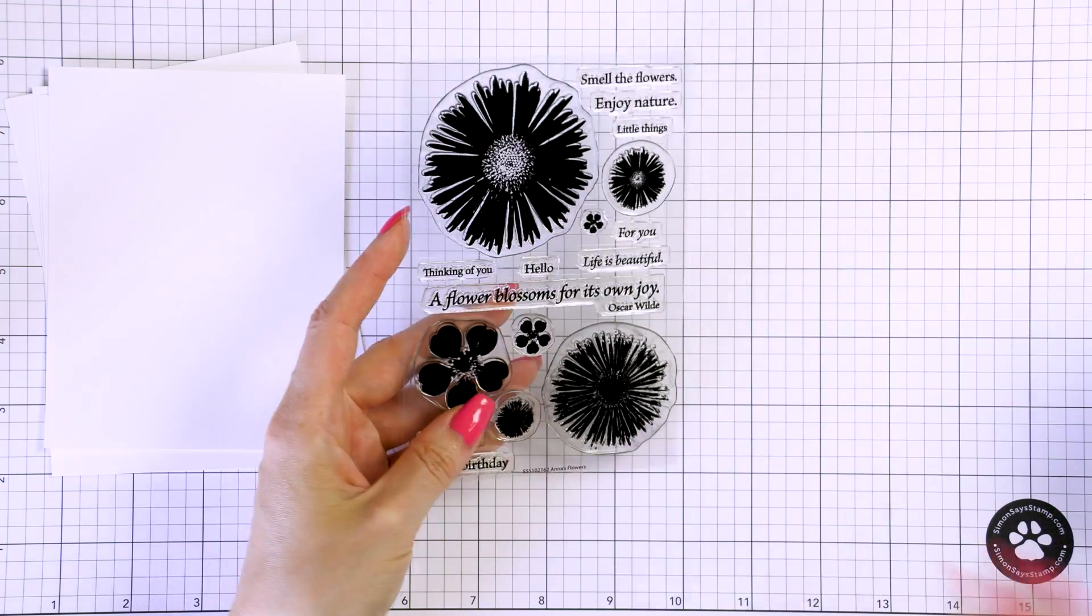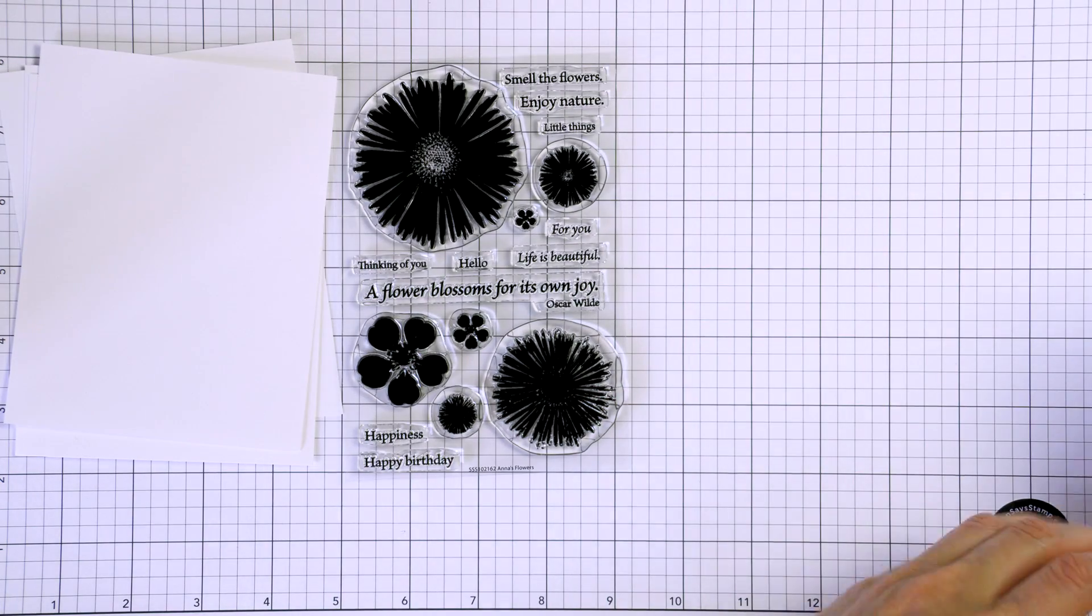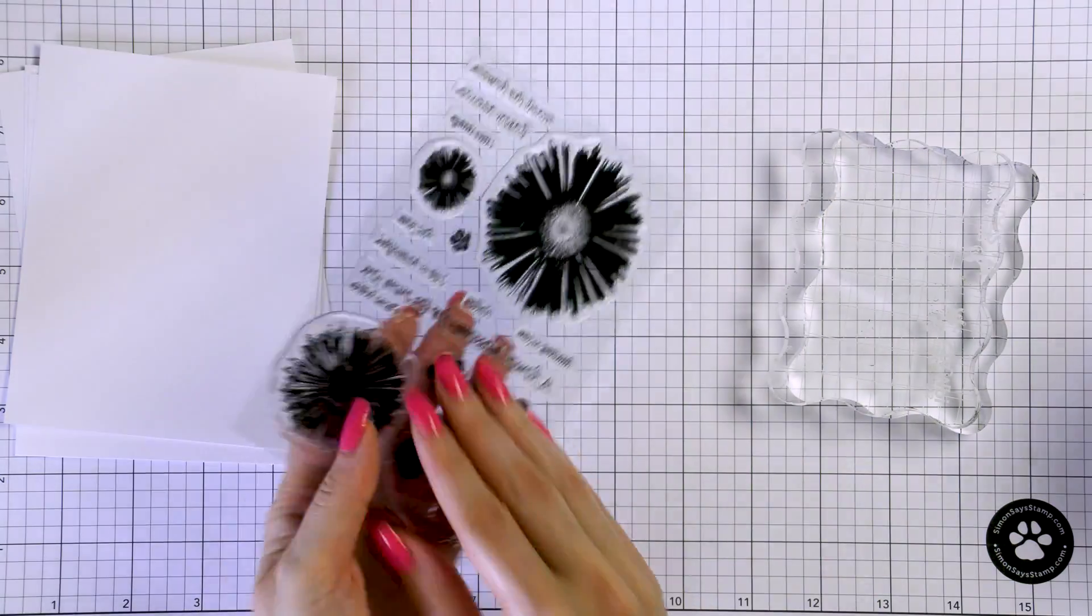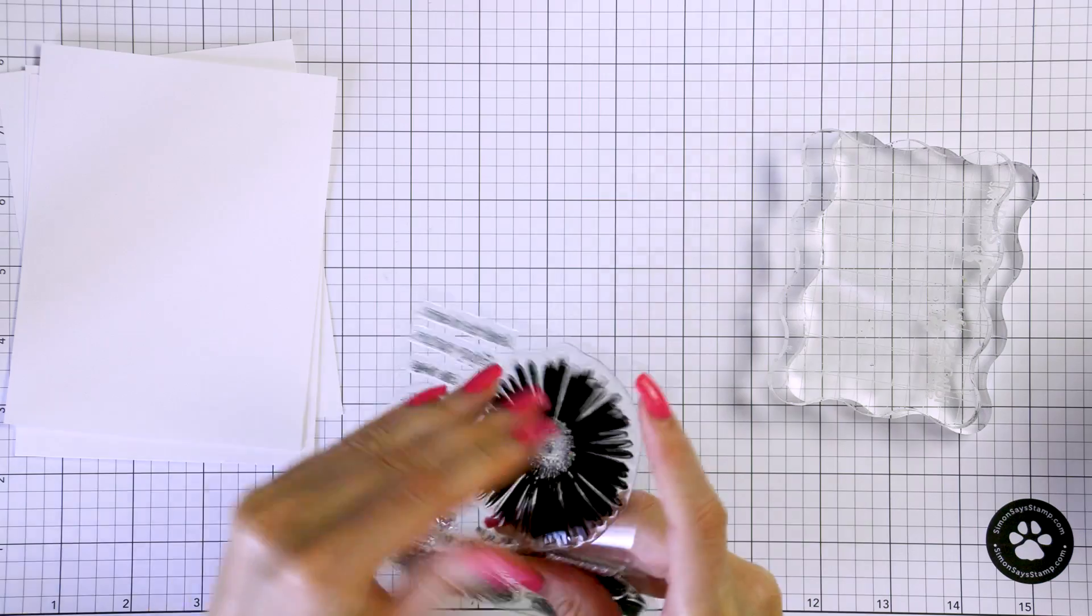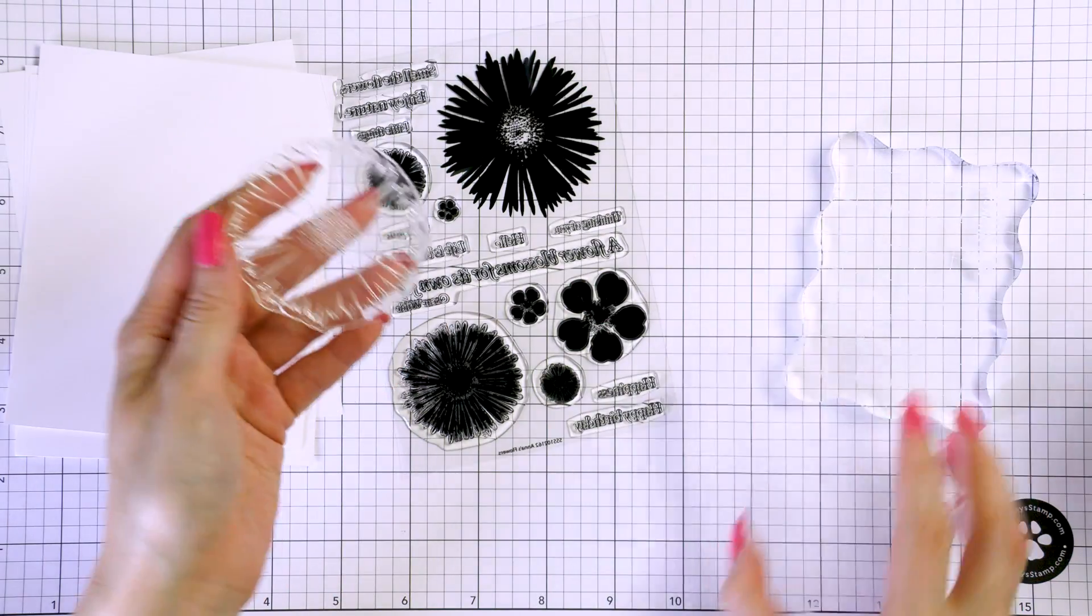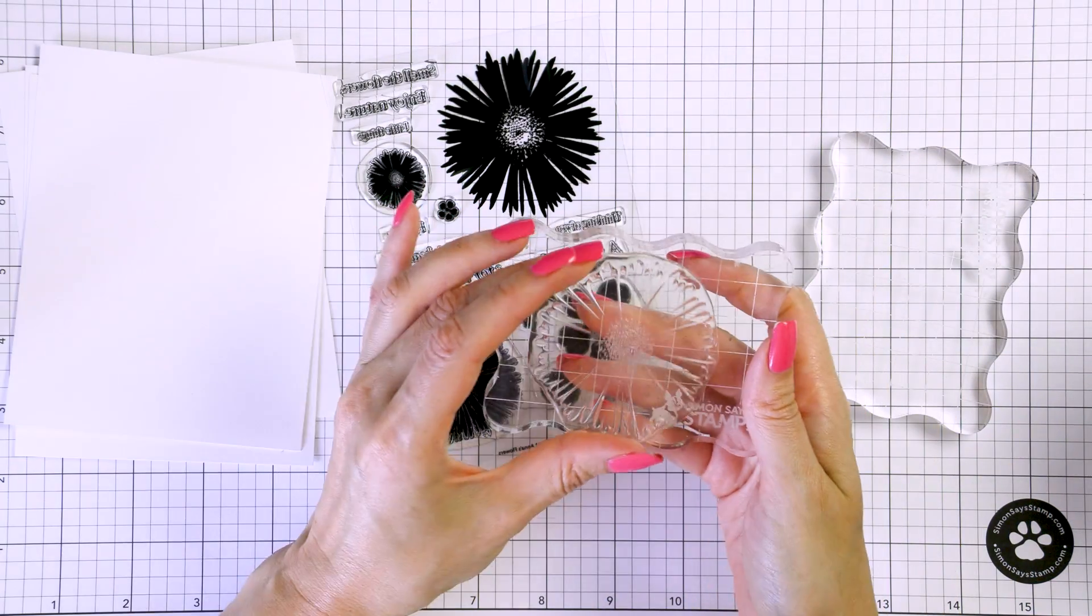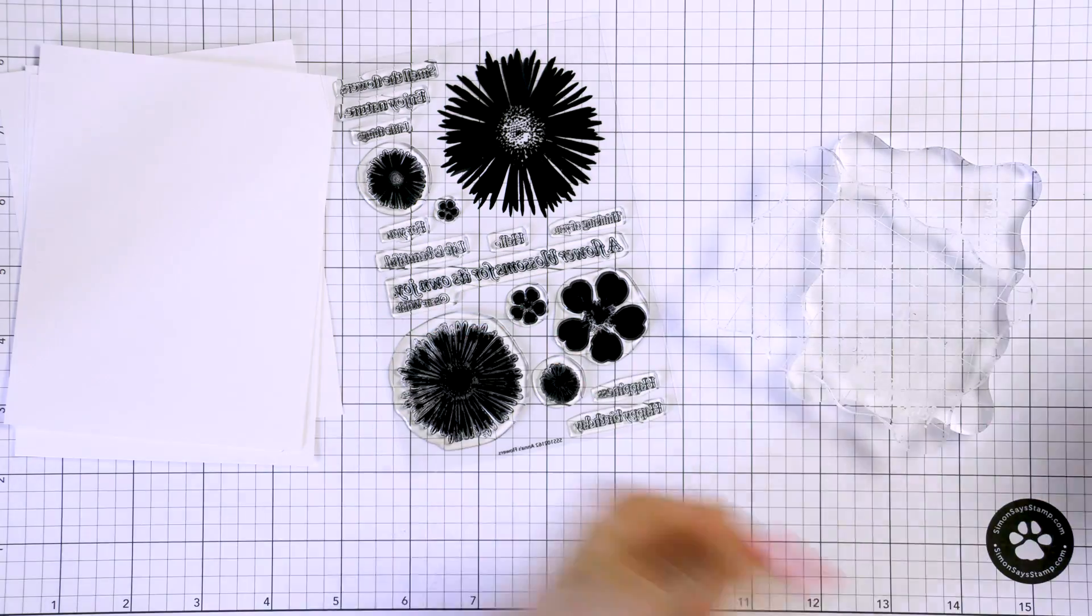The stamp set I will be using is this Anna's Flowers set from Simon. You can also look through your stash for similar type solid floral images. I love that this set has the same type flower in various sizes and we will be stamping nearly every size to make backgrounds for our cards today.